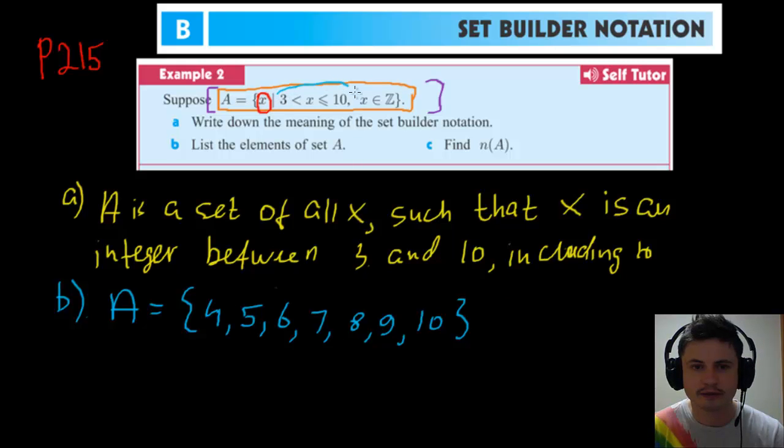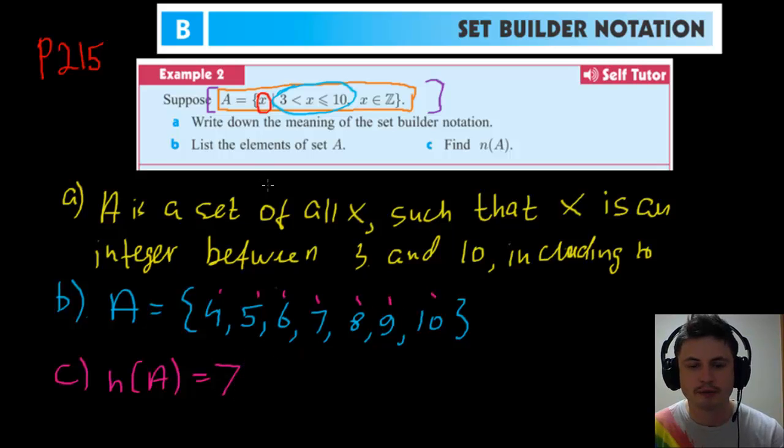The last question is find n(A). If you remember correctly, n represents the number of numbers inside the set. Here we have 1, 2, 3, 4, 5, 6, 7, so the answer is 7. This is basically how we do this example.